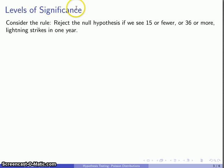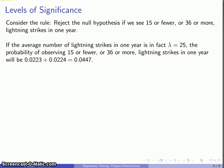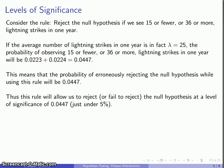The important question is: what's our level of significance for this rule? We can calculate that. The probability that the null hypothesis will produce an event that causes us to reject the null hypothesis is going to be the sum of those two tail probabilities — about 0.0447, just under 5%, which is what we like as a minimal level of significance for our tests of hypothesis. So our rule seems to be at least a reasonable starting point. If I observe 15 or fewer or 36 or more lightning strikes in one year, I'm willing to reject the null hypothesis at a level of significance just around our standard 5% level.